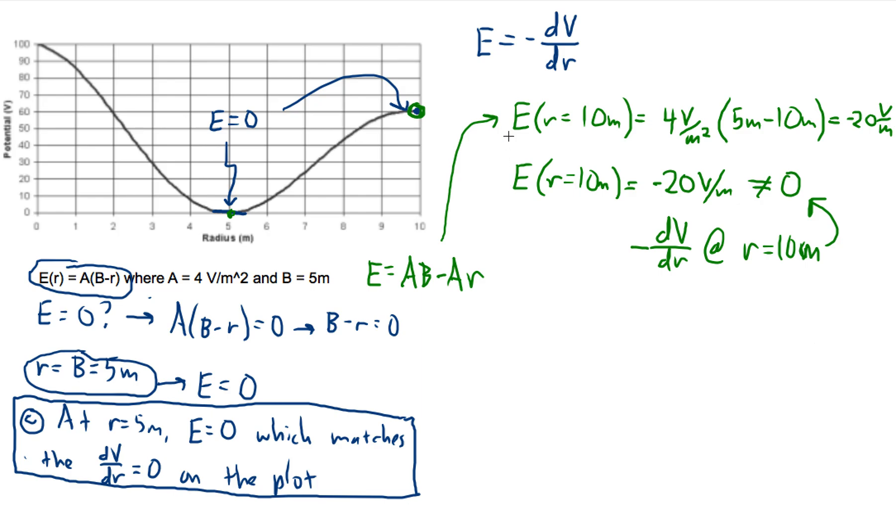So probably you could answer this for part D and I think be pretty well justified by saying that there's a zero in the electric field from the voltage plot clearly, but equally clearly, there's not a zero from the electric field or from this linearized electric field equation they give you. So that's the easiest answer.